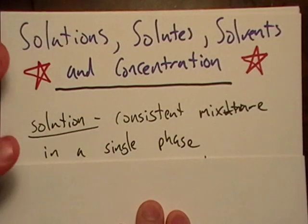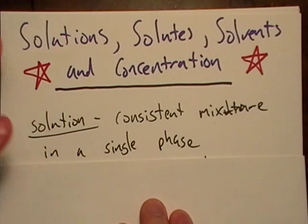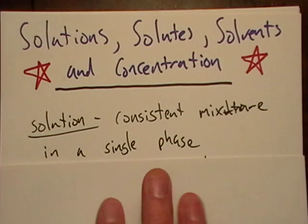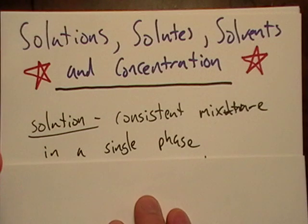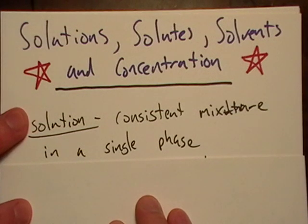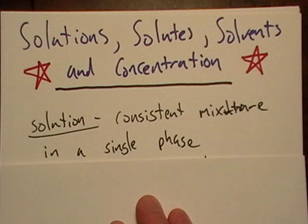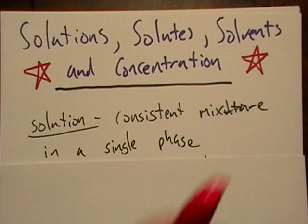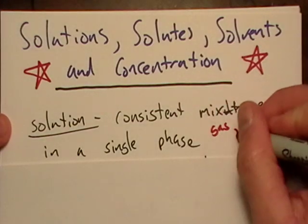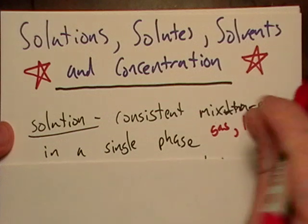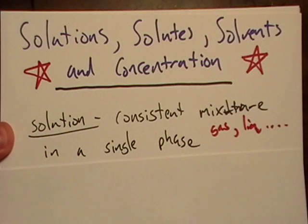So first thing, solution. What is a solution? Well, it's just a consistent mixture of something in a single phase. And by consistent, your book might call it homogeneous. A homogeneous mixture in a single phase. And by phase, we're just talking gas, liquid, yada yada. Probably won't have too much solids in your solutions.